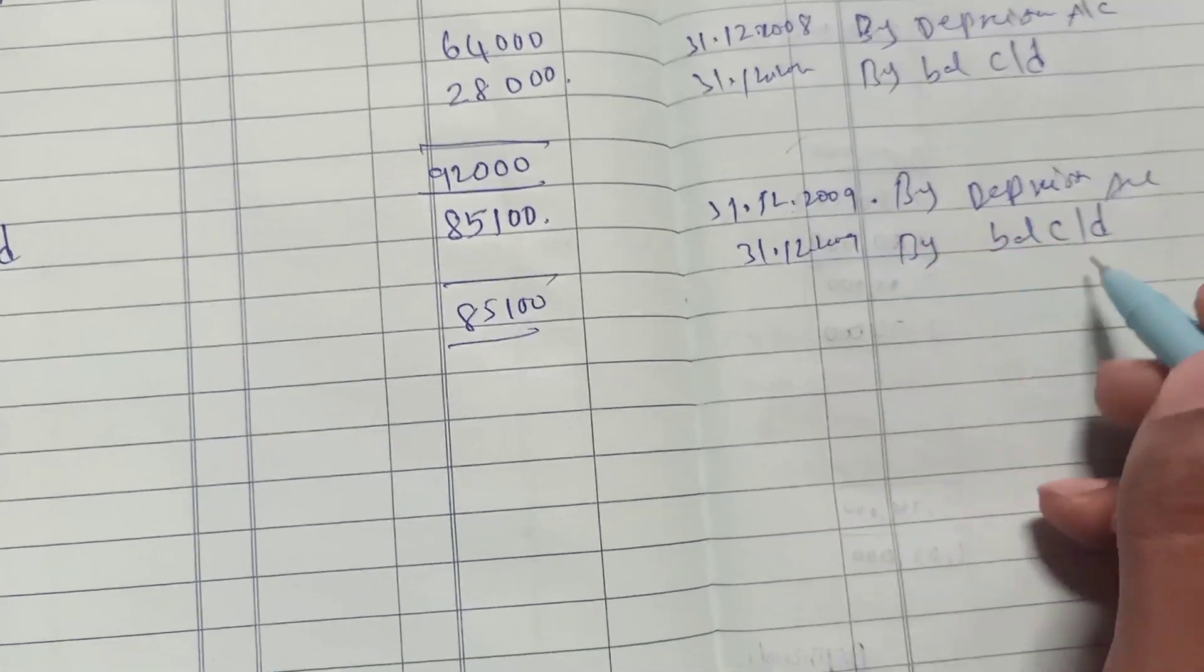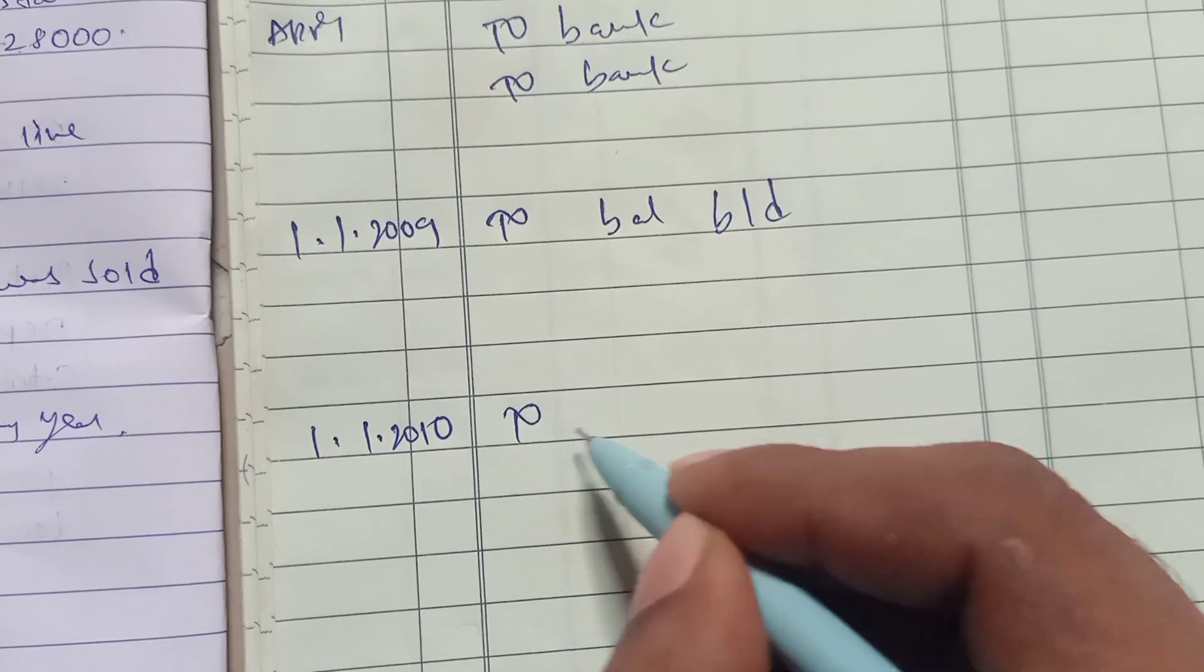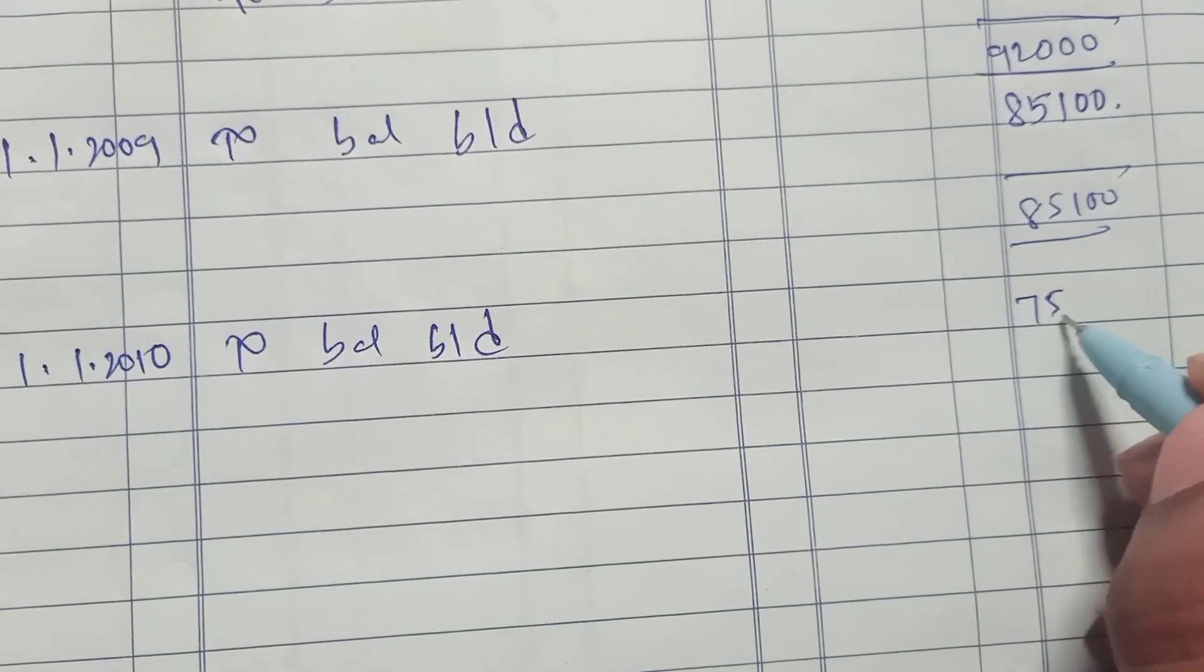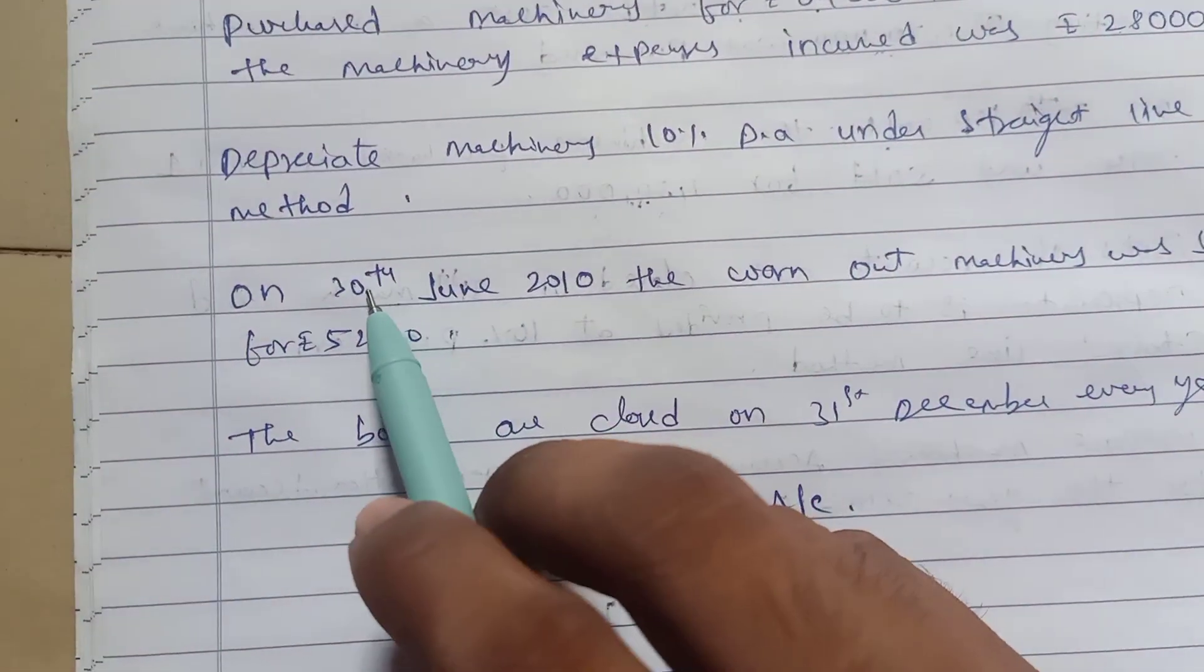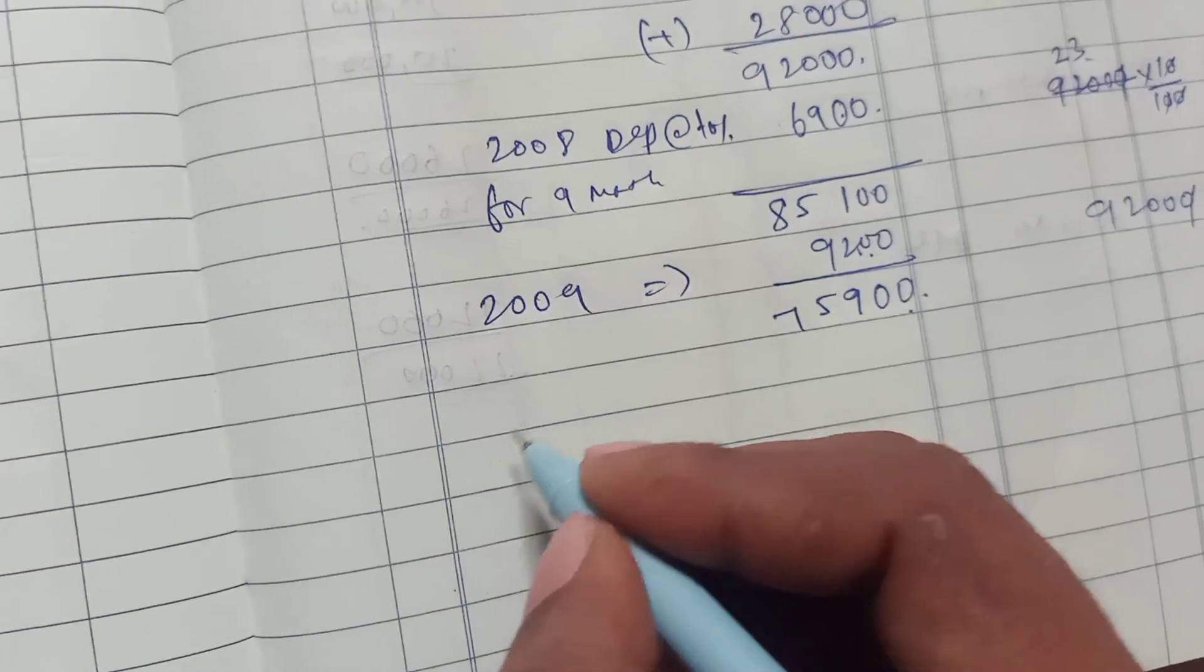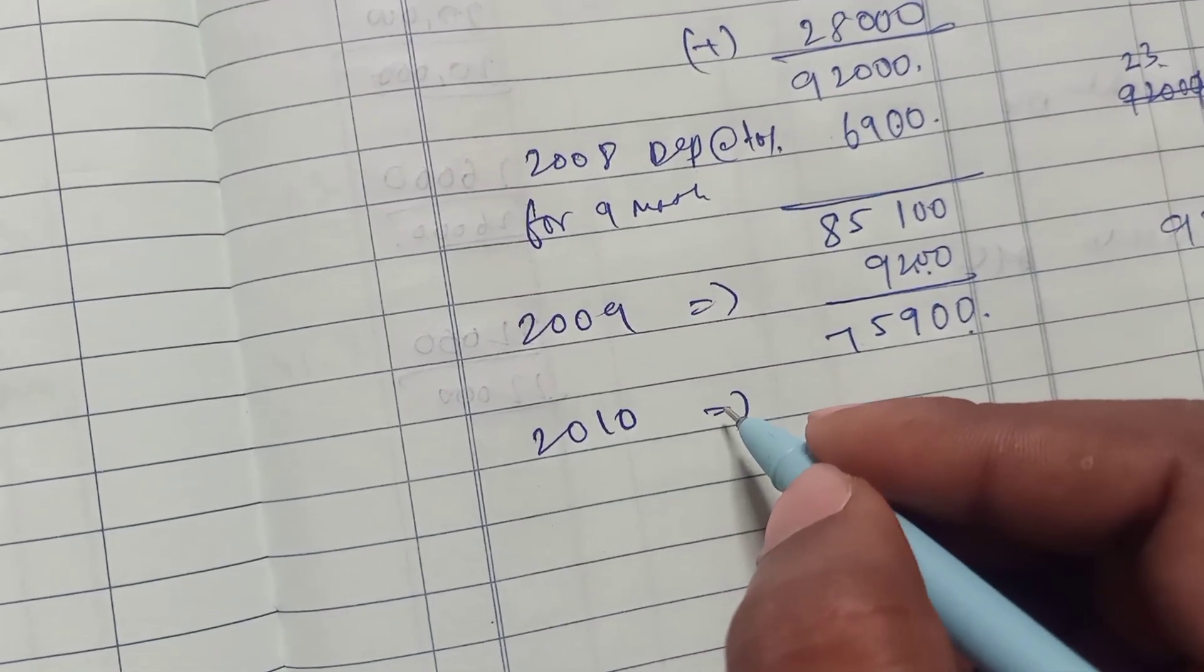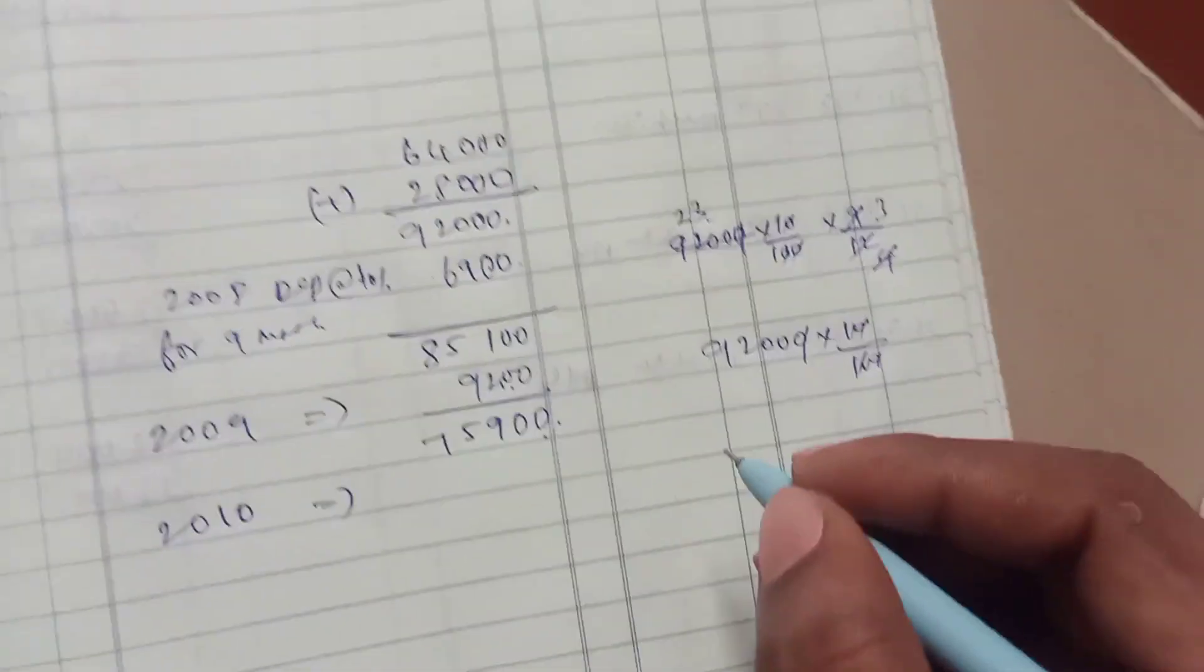Next year, 1/1/2010 to balance brought down $75,900. First, depreciation on 30th June, that means now only 6 months.